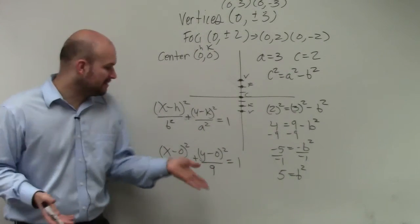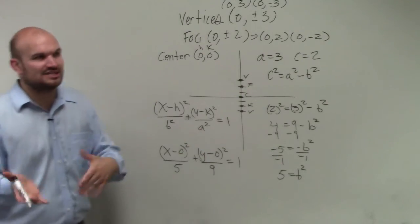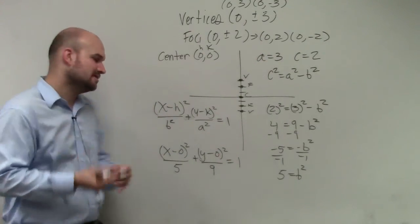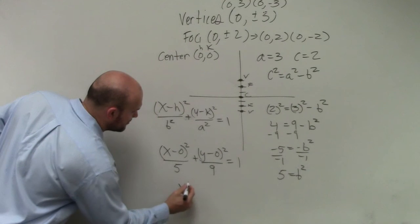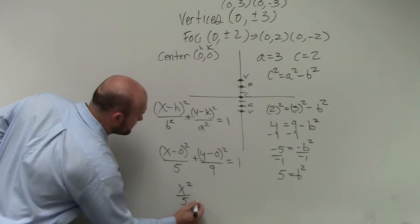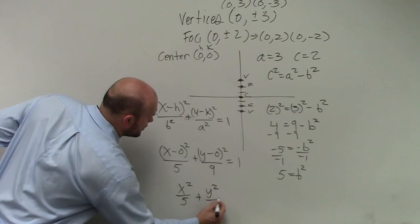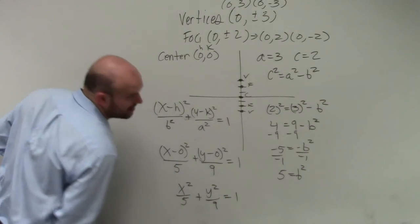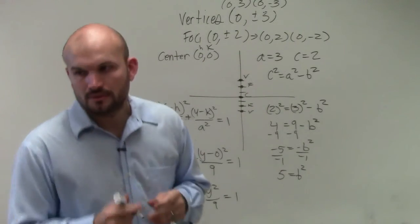And in reality, ladies and gentlemen, we don't really need to write the x minus 0. I just did that so you guys can see plugging in h and k. But in reality, the simplified form would be x squared over 5 plus y squared over 9 equals numeral 1. And that's it.